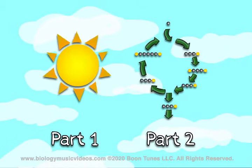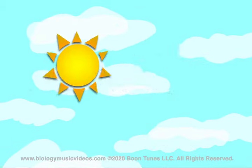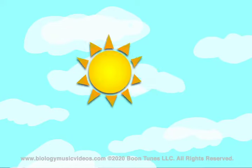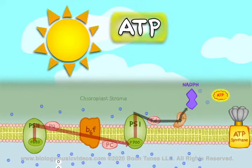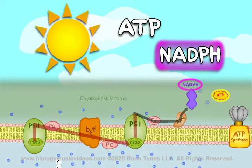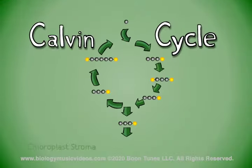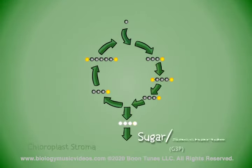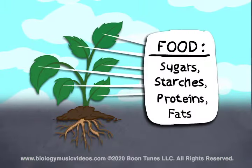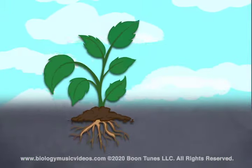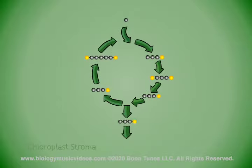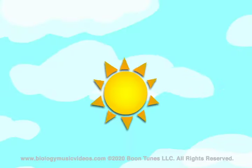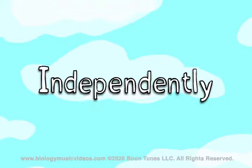This begins with a two-part process known as photosynthesis. The light reactions, or part one, use radiant energy from the sun to photoelectrically generate ATP and NADPH. The Calvin Cycle, or part two, uses those products plus CO2 to make a sugar or saccharide from which the plant's food is derived. Follow along and you will see how the sugar is made cyclically — independently of the sun.